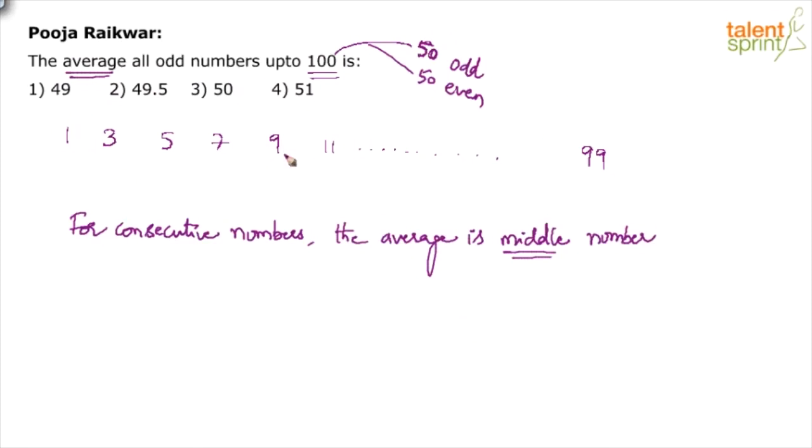I'm sure you would know that those two middle numbers would be 49 and 51. 49 will be the 25th odd number, 51 will be the 26th odd number. And then there are total 50 odd numbers. So in the first 25 odd numbers, the last one is 49. In the second 25 odd numbers, the first one is 51. And these two will form the pair of those two middle numbers.